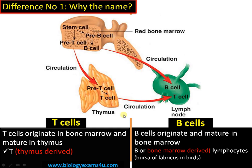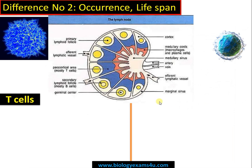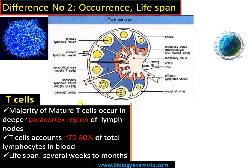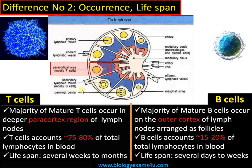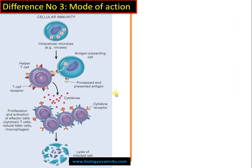Both T cells and B cells enter circulation and reach secondary lymphoid organs like lymph nodes after maturation. Regarding occurrence and lifespan: the majority of T cells occur in the deeper paracortical region of the lymph nodes, accounting for 75 to 80 percent of total lymphocytes in blood, with a lifespan of several weeks to months. B cells are often seen in the outer cortical region of lymph nodes as follicles, accounting for 15 to 20 percent of total lymphocytes, with a comparatively short lifespan of several days to weeks.